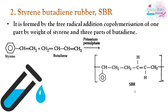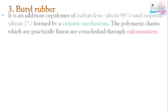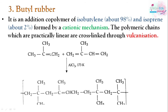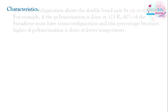Then we have butyl rubber, which is an addition co-polymer of isobutylene and isoprene. 98 percent isobutylene and 2 percent isoprene are used, and a cationic mechanism is involved. The polymeric chains obtained are linear, and cross-linking is achieved through vulcanization. The resulting structure is butyl rubber with a shifted double bond from the isoprene units.